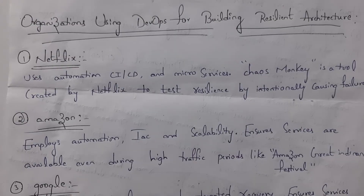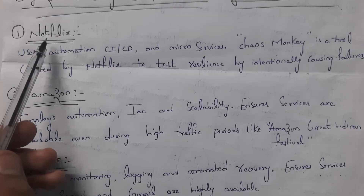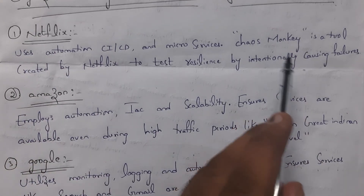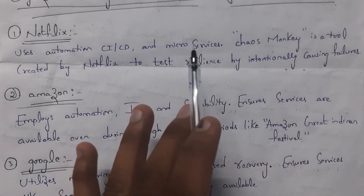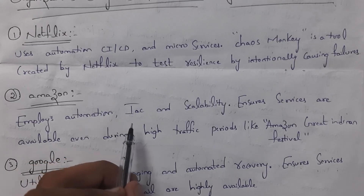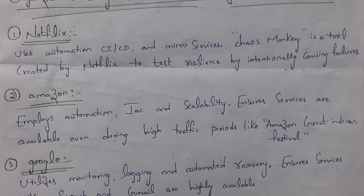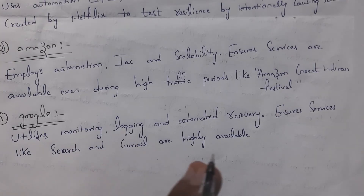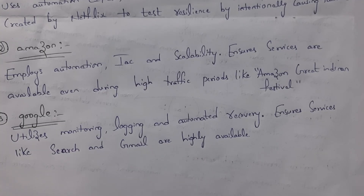There are three popular companies using DevOps to build resilient architecture. First is Netflix — Netflix uses automation, continuous integration and deployment, and microservices architecture. Netflix uses a tool called Chaos Monkey to intentionally try to fail the application and check whether the application handles the failure. This is how Netflix built resilient architecture. Second is Amazon — Amazon uses automation, infrastructure as code, and scalability, so that even during high traffic periods like the Amazon Great Indian Festival when millions of people access Amazon, it remains available. Third is Google — Google utilizes monitoring, logging, and automated recovery, which is why Google services like Google Search and Gmail are highly available.